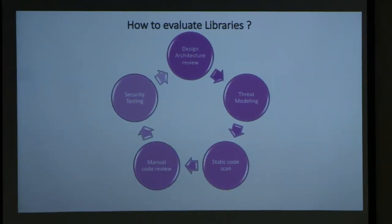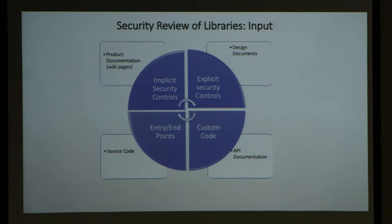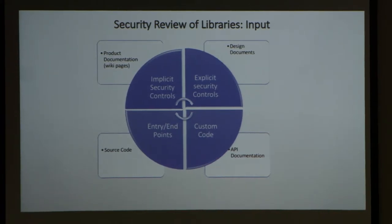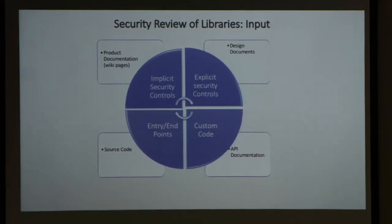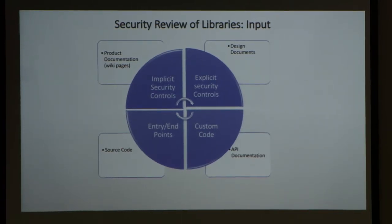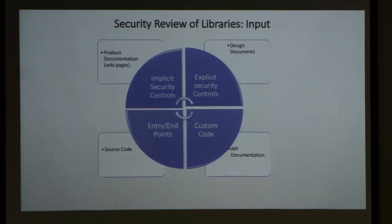The good news is we can use the same foundational framework to evaluate libraries but tweak it slightly. We don't have to do extensive steps. Security folks or developers with a security focus should go through all the product documentation, wiki pages, design documentation, source code, and API documentation available on the library — then create a list of four things: implicit security controls, explicit security controls, entry and exit points, and what custom code has been written on top of the library.